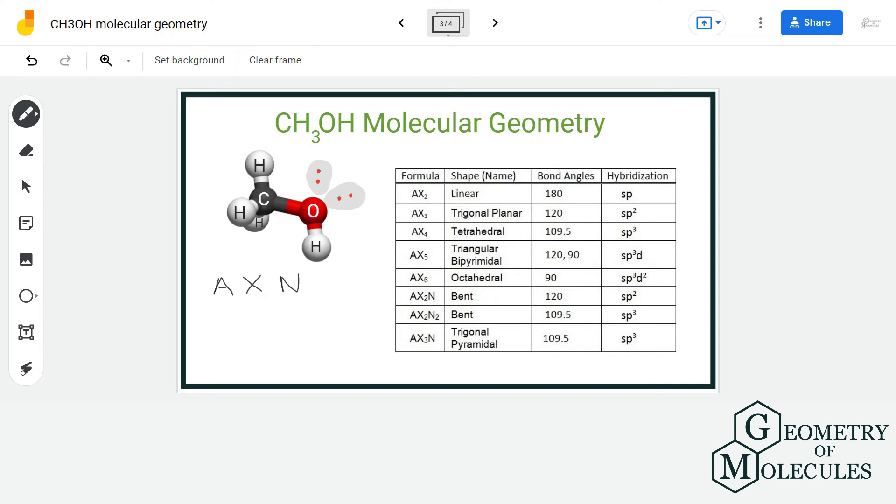Here we have carbon as the central atom. It is forming four bonds and there are no lone pairs of electrons. This gives us a notation of AX4. If we refer to this table, we can see that molecules that have AX4 formula have tetrahedral shape with bond angle 109.5 degrees.